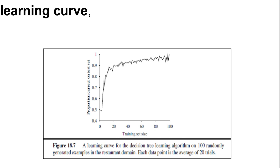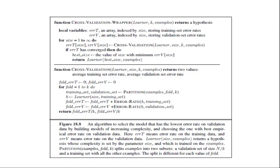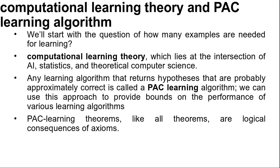Are there some more general principles governing the number of examples needed in general? Questions like this are addressed by computational learning theory, which lies at the intersection of AI, statistics, and theoretical computer science.